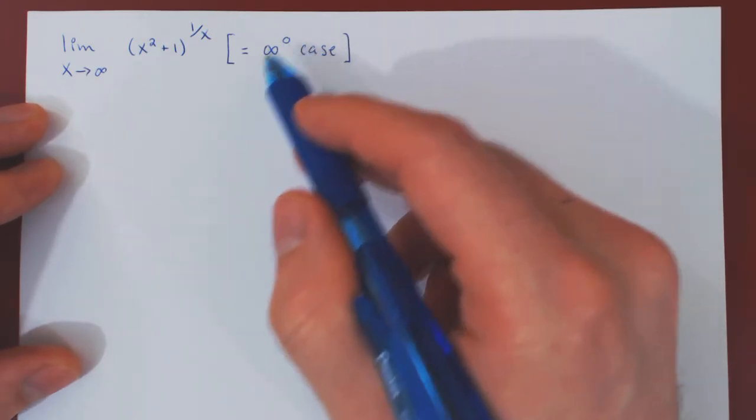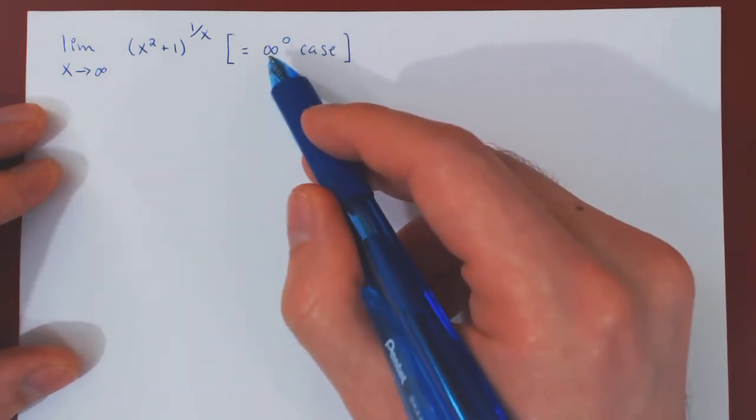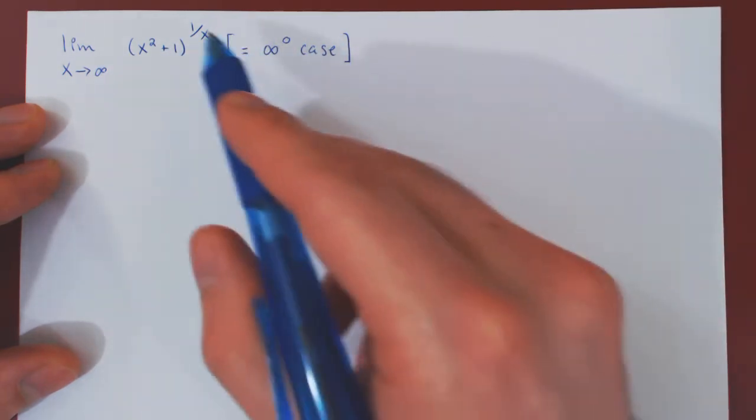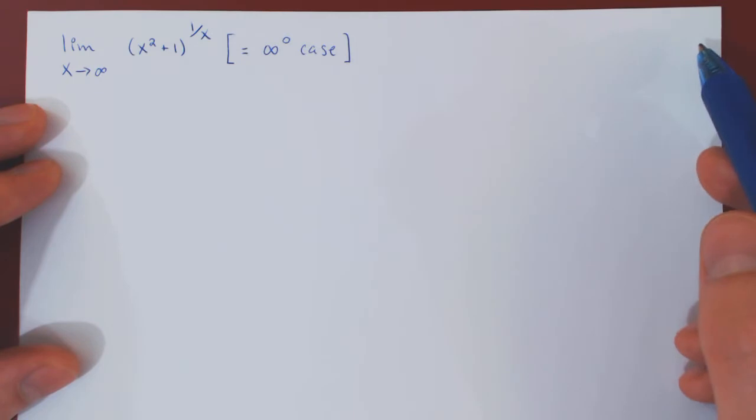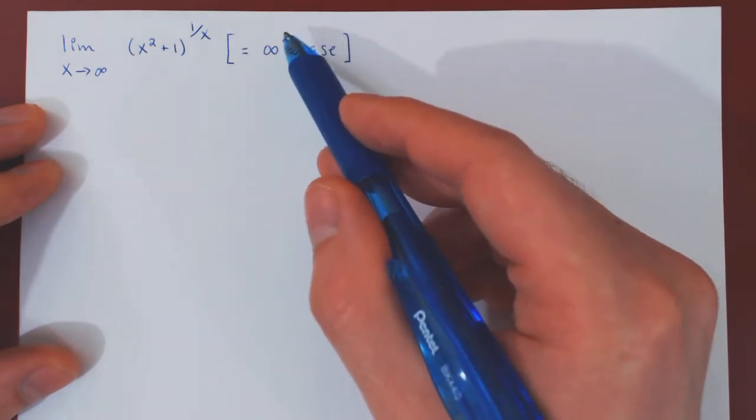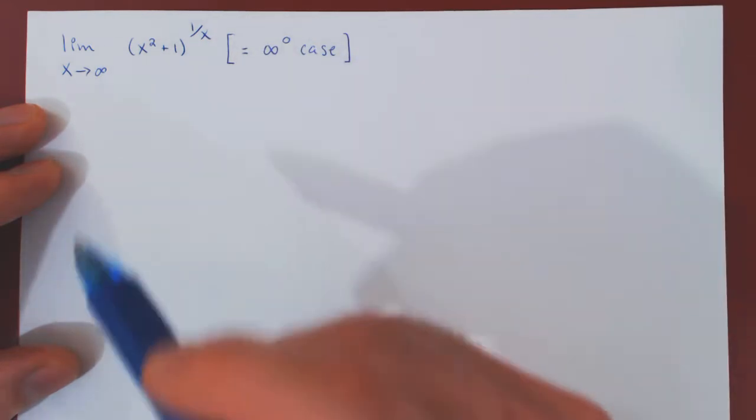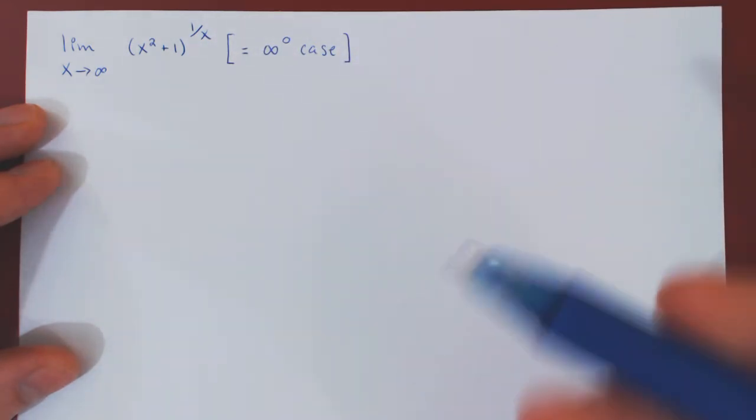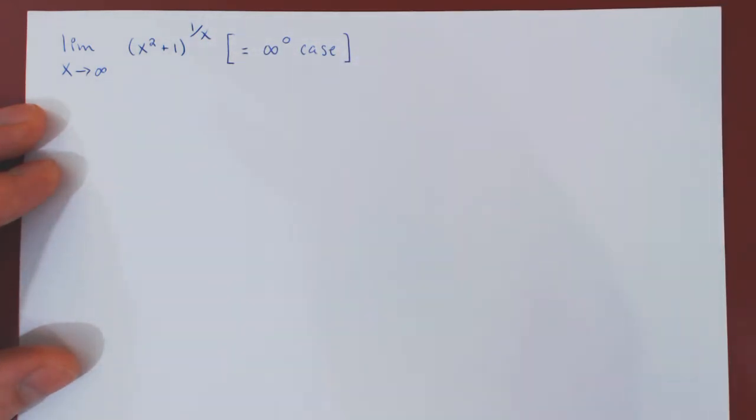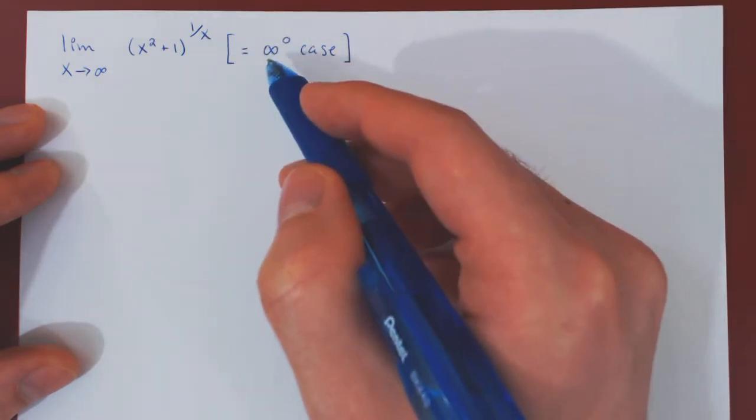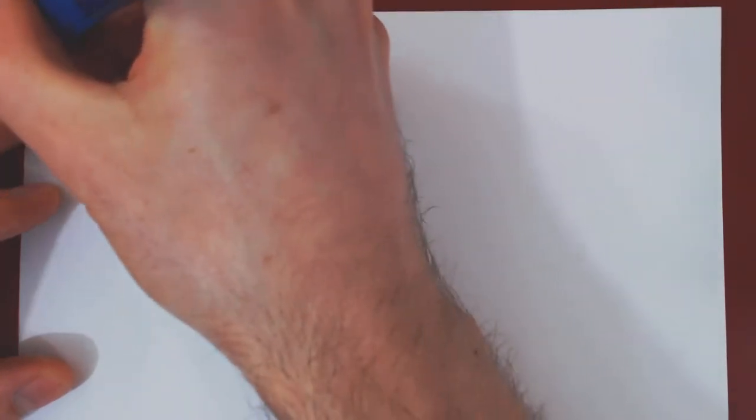This is again a non-trivial case as the base of our expression going to infinity tries to push the whole thing to infinity. But the exponent shrinking to 0 tries to bring the whole expression back down to 1, as any fixed number to the 0th power is 1. So you see, we have again a non-trivial case as we have two opposing forces.